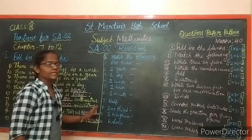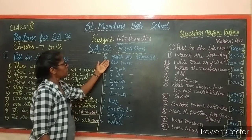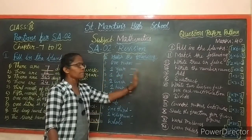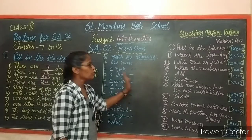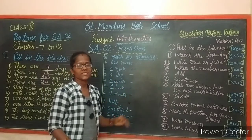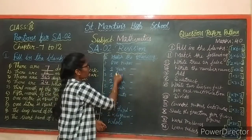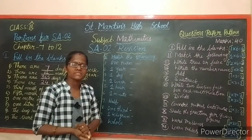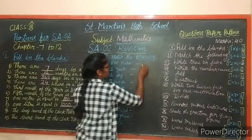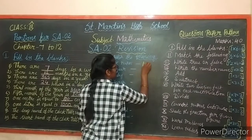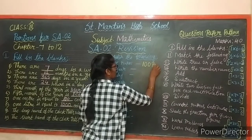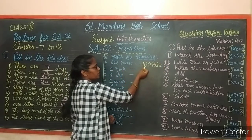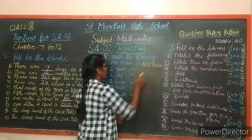I think you understood up to here. Now we can move to match the following. A column and B column will be given, and you have to match them. First: 1 rupee equals how much paise? 100 paise. 1 rupee is equal to 100 paise.